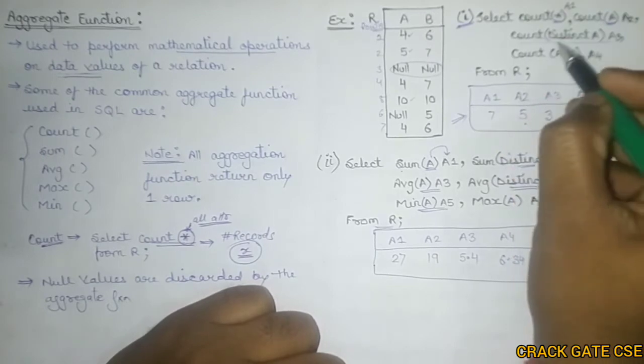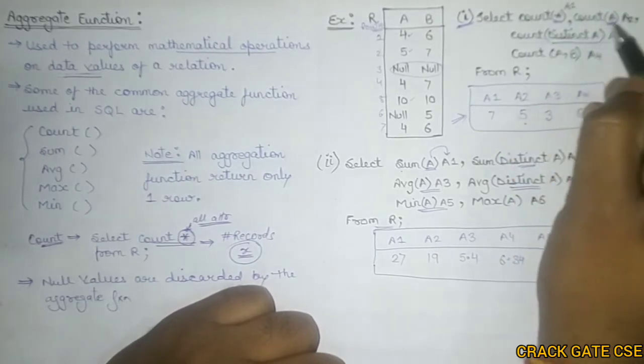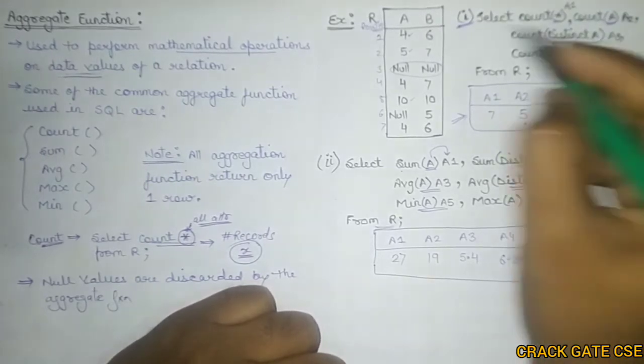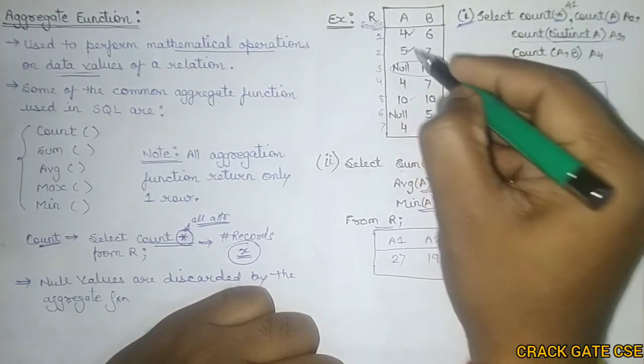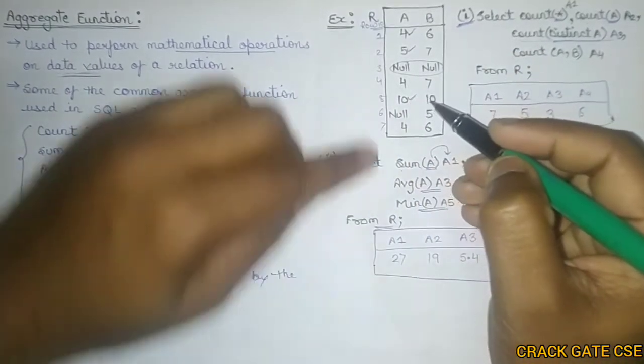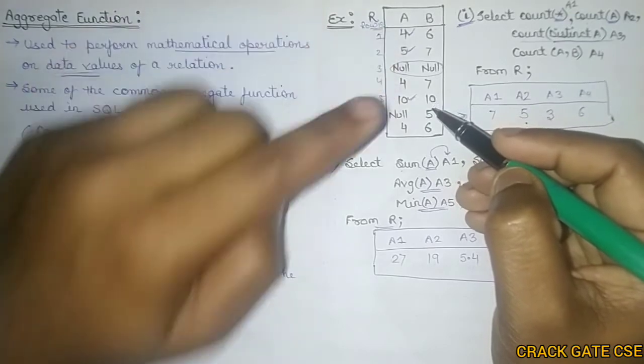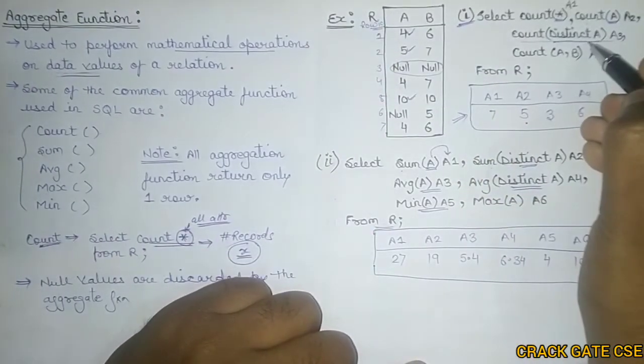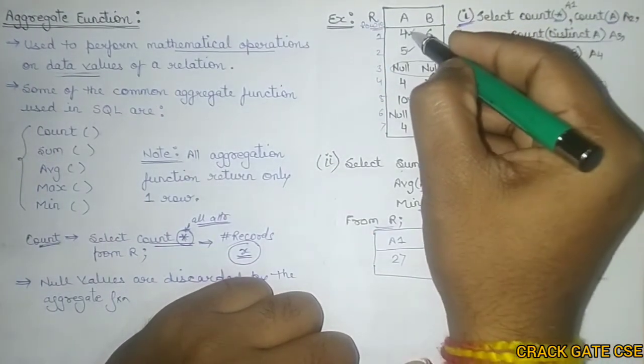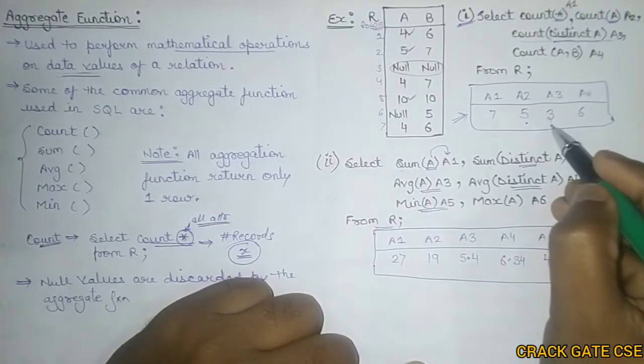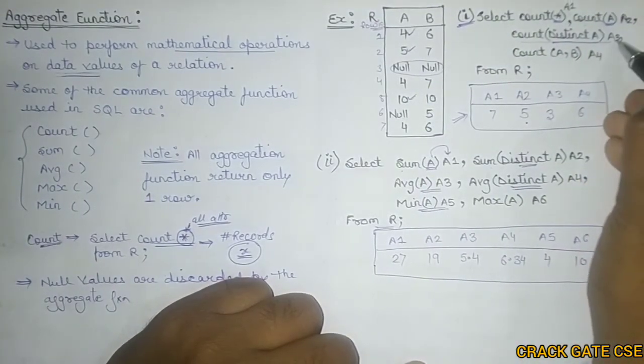Similarly, if we have to count the distinct A and store them in A3. What are the distinct A values? 4 is one value, 5 is one value, and 10 is other value. This 4 is repeated, it is not distinct. And we have to count only the distinct values. So how many distinct values? 1, 2, 3. So we got 3 distinct values and stored in A3.